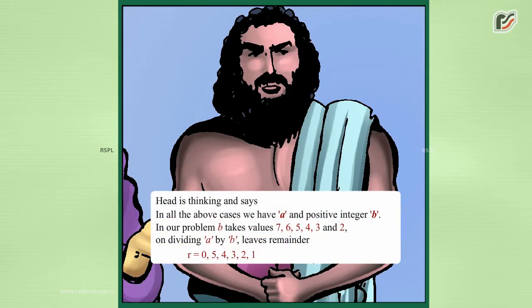The head thinks through the problem and says: in all cases, we have a and a positive integer b. In our problem, b takes values 7, 6, 5, 4, 3, and 2. On dividing a by b, the remainder r equals 0, 5, 4, 3, 2, and 1 respectively.